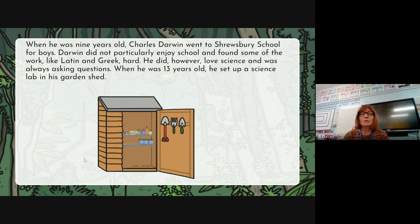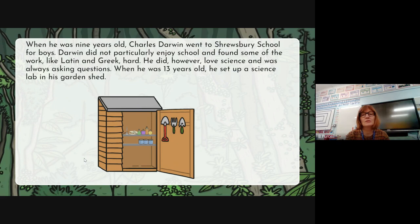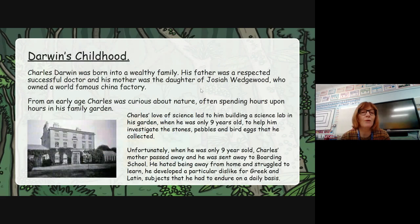Then I had: 'When he was nine years old, Charles Darwin went to Shrewsbury School for boys. Darwin did not particularly enjoy school and found some of the work in Greek hard. He did, however, love science and was always asking questions. When he was 13 years old, he set up a science lab in his garden shed.' I didn't have a subheading there to tell the reader what part of the biography I was writing about, so I looked at how I could improve that. As you can see, I've written a lot more information and added the subheading 'Charles Darwin's Childhood.'